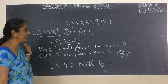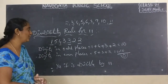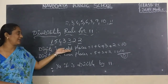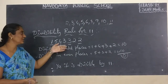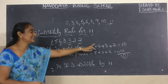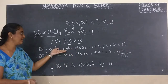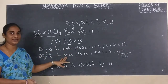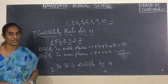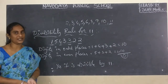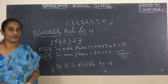Okay children, do you understand? By observing this sum you understand — here we can write even places first and odd places next, or odd places first and even places next. That is your wish, because we got the same numbers. In the next class we will see some more sums using divisibility rules. Thank you.